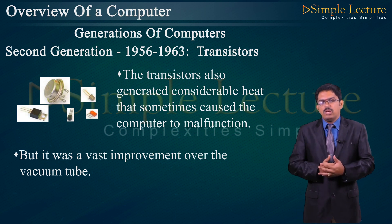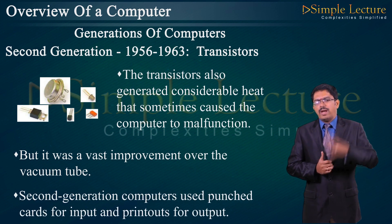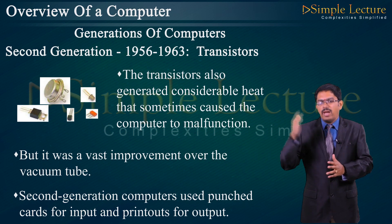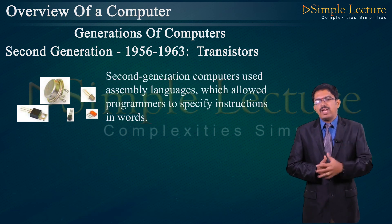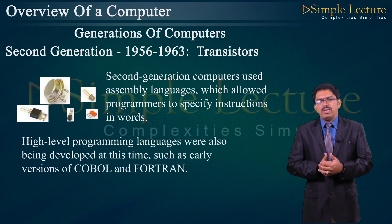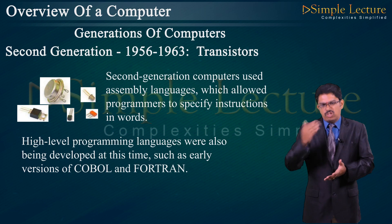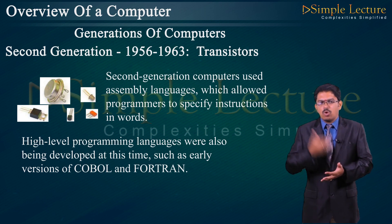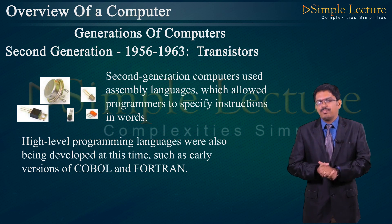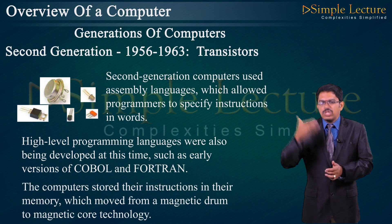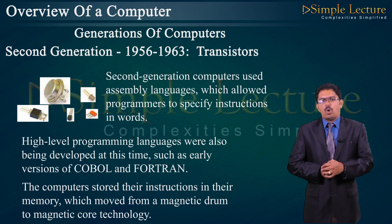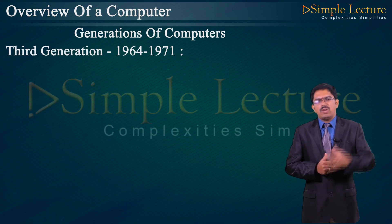Transistors also generated considerable heat that sometimes caused the computer to malfunction, but this was always a vast improvement over vacuum tubes. Second generation computers used punch cards for input and printouts for output. They used assembly languages that allowed programmers to specify instructions in words. Higher-level programming languages were also being developed at this time, such as early versions of COBOL (Common Business Oriented Language) and FORTRAN (Formula Translation). Memory advanced from magnetic drums to magnetic core.